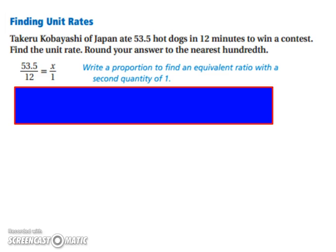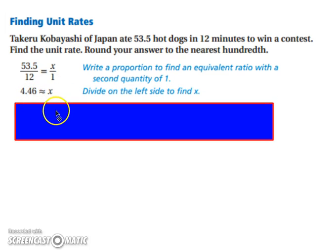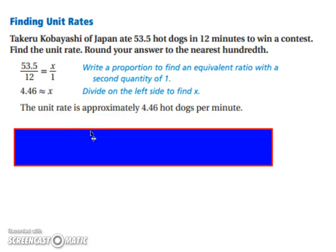Let's look at finding unit rates. Takeru Kobayashi of Japan ate 53.5 hot dogs in 12 minutes to win a contest. Find the unit rate. We want to simplify — we want a unit rate, so we go 53.5 divided by 12. When we divide that out, we end up with about 4.46. So he ate approximately 4.46 hot dogs per minute.